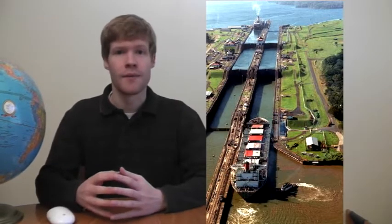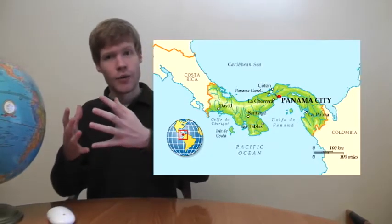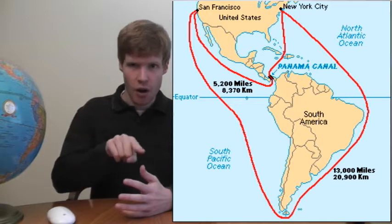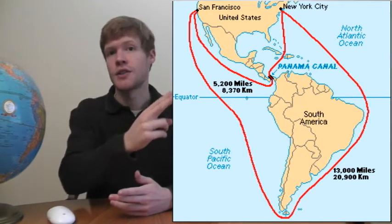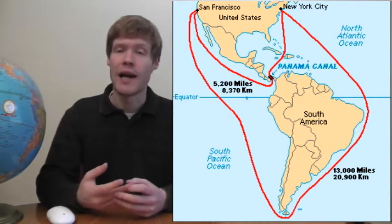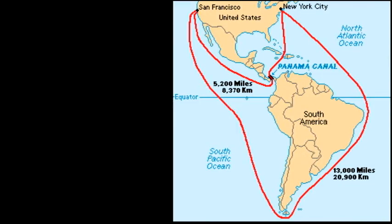Another important waterway is the man-made Panama Canal. This allowed, once it was completed, ships instead of having to sail all the way around South America to be able to cut across and get to the Pacific very easily, and this made shipping way easier for the United States and other places in the world. So those are the major rivers and water systems.